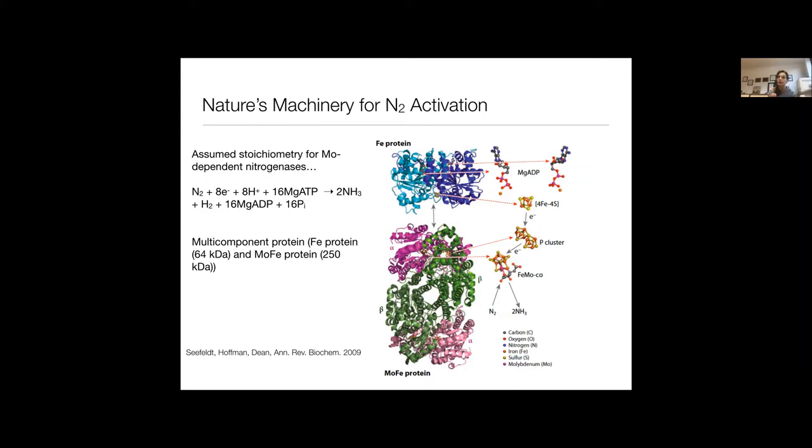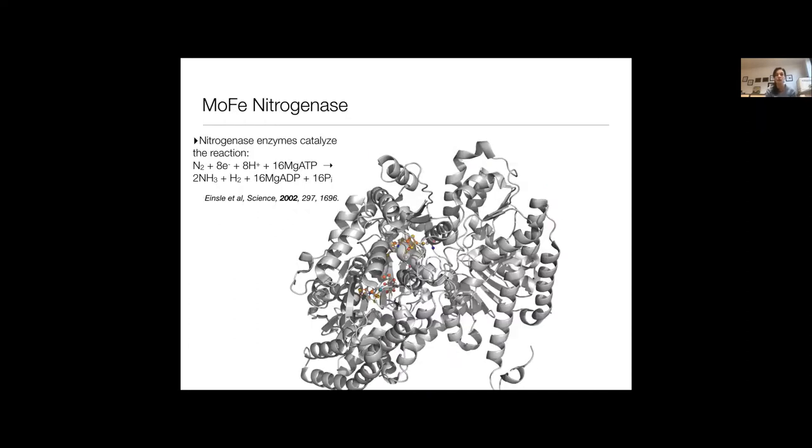It has in it something called the P cluster that you can see labeled there. It has eight irons all bridged by sulfur. And from there, electrons are transferred to FeMoCo, which is the site where nitrogen is converted to ammonia. Now what I want to point out, and we'll get back to this later, is when you look at the complexity of this, you see there's a lot of iron in this protein. There's a lot of sulfur in this protein, not just in the active sites, but also in the cysteines and the methionines. And so this is one of the big challenges, is how do you get selective enough to actually see what you need to see and understand how the protein is changing?